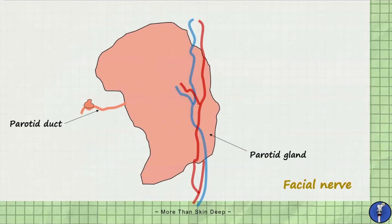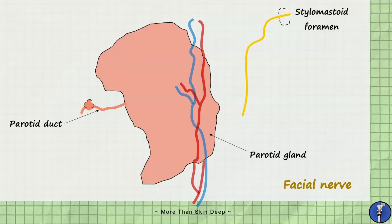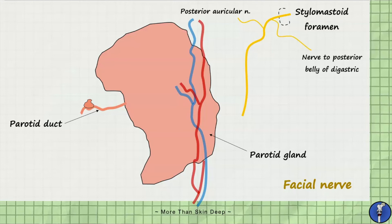The facial nerve leaves the skull through the stylomastoid foramen. This is located between the styloid and mastoid processes of the temporal bone and marks the termination of the facial canal. Immediately after leaving the stylomastoid foramen, the facial nerve gives off three extracranial branches: the posterior auricular nerve, which supplies the auricular and occipital frontalis muscles; the nerve to the posterior belly of digastric; and the nerve to the stylohyoid muscle.